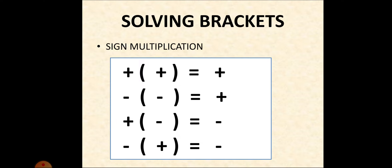The first rule: solving brackets. For solving brackets, we will be using sign multiplication. Plus of a plus becomes plus. Minus of minus also becomes plus. Plus of a minus becomes minus, and minus of plus also becomes minus. That means, if we are multiplying the same sign, we'll get positive. If we are multiplying opposite signs, we'll get negative.